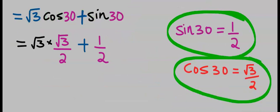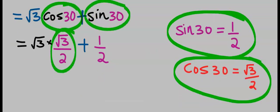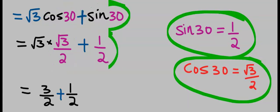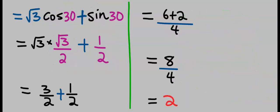This, because cos 30 is root 3 over 2 and sin 30 is 1 over 2. If you solve carefully, your answer is 2.